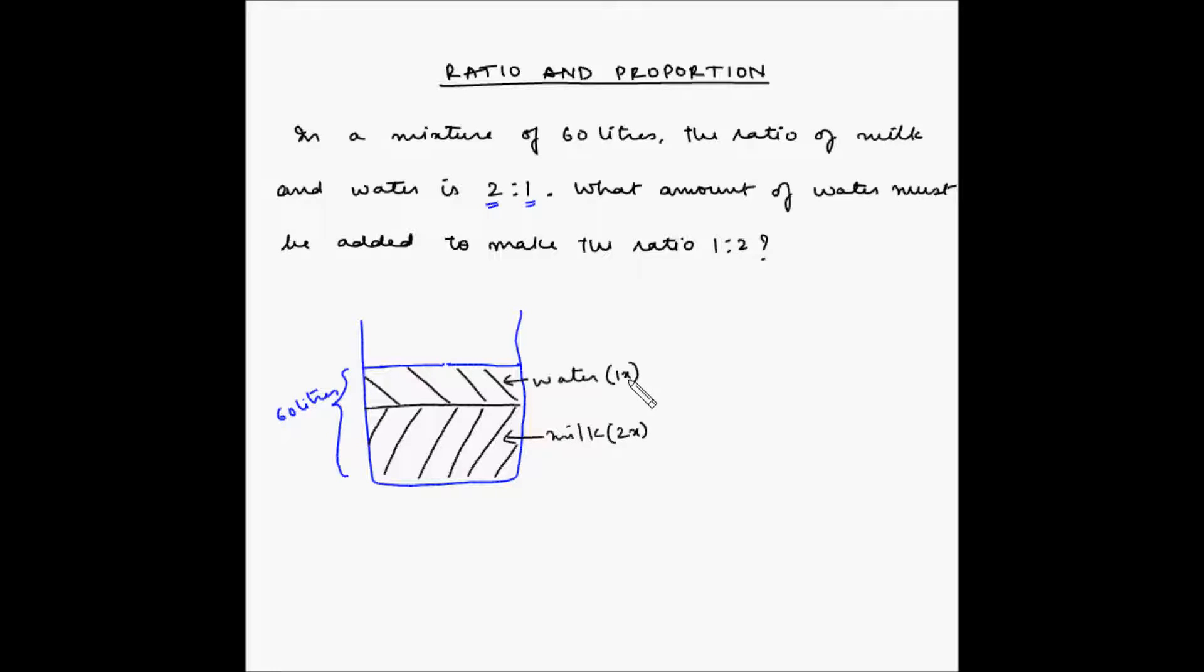Why is this x? Because a ratio such as 2 divided by 1 can also be written as 2x divided by 1x. That is, we can multiply the numerator and the denominator by the same number and then when this common number gets cancelled, basically you get the ratio 2 is to 1.